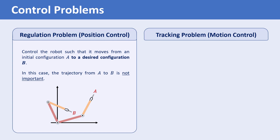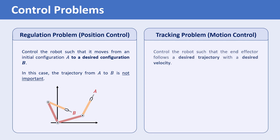In the tracking problem, a desired trajectory for the end effector is given, and we want to control the robot such that the end effector moves on the desired trajectory with a desired velocity.